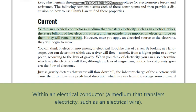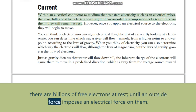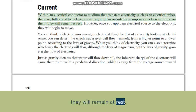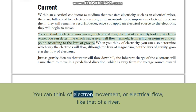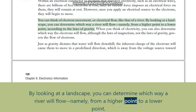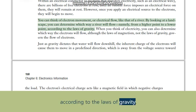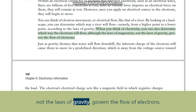Current. Within an electrical conductor — a medium that transfers electricity, such as an electrical wire — there are billions of free electrons. At rest, until an outside force imposes an electrical force on them, they will remain at rest. However, once you apply an electrical source to the electrons, they will begin to move. You can think of electron movement or electrical flow like that of a river: by looking at a landscape you can determine which way a river will flow, namely from a higher point to a lower point, according to the laws of gravity. When you think of electricity, you can also determine which way electrons will flow, although the laws of magnetism — not the laws of gravity — govern the flow of electrons.